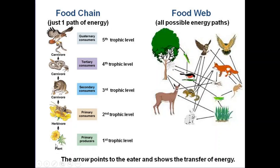At the bottom of the chain we've got the producers, which are the plants. Then the primary consumer eats those producers. The arrow points to the eater and shows the transfer of energy going into that organism. The sun's energy is pointed into the plant, then the plant goes into the primary consumer, the primary consumer into the secondary consumer, secondary into tertiary, and tertiary into quaternary.